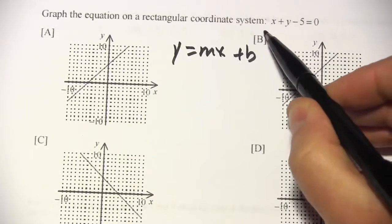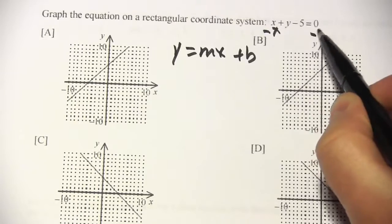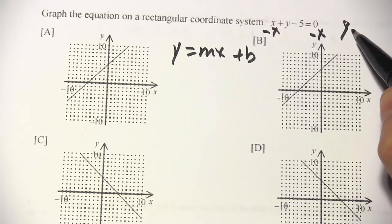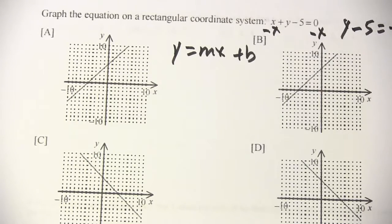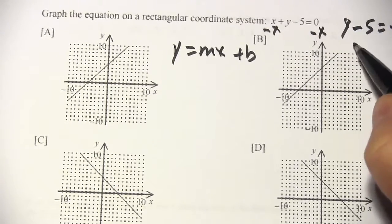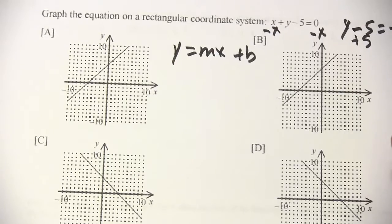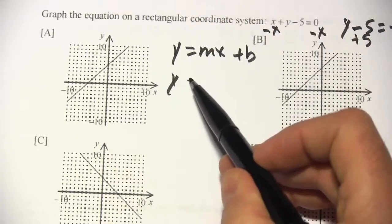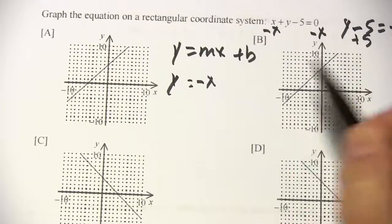I can move this x over by subtracting it from both sides. That would give me y minus 5 equals negative x. And then I can get rid of that 5 on this side by adding 5 to both sides. So my equation is going to be y equals negative x plus 5.